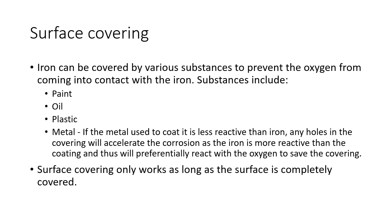Surface covering works as long as the surface is completely covered. If you have any chips on your paint surface on an iron object, you really need to get those fixed. Even though you see a little chip and think it's not too bad, the oxygen is taking electrons from there. The iron will usually pit underneath the paint, so you won't see where the structural damage is. Any little holes need to be fixed immediately.